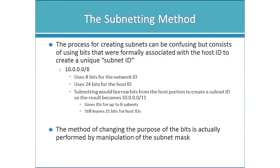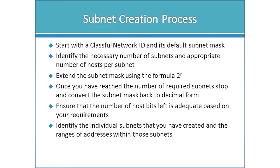By extending the subnet mask, we're changing which bits are part of the network ID. Originally only the first 8 bits were the network; now the first 11 bits reference the network ID. This gives additional bits to create unique subnet IDs. Originally the formula was 2^n minus 2 because classful routers couldn't use all-zeros or all-ones subnet IDs, but with classless routing and modern routers, the formula is simply 2^n.